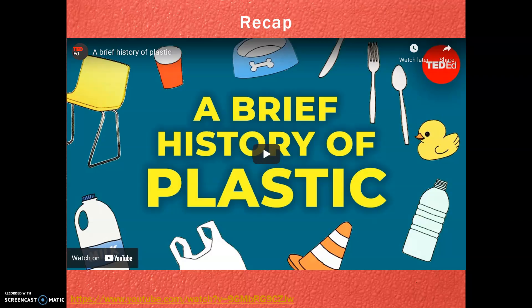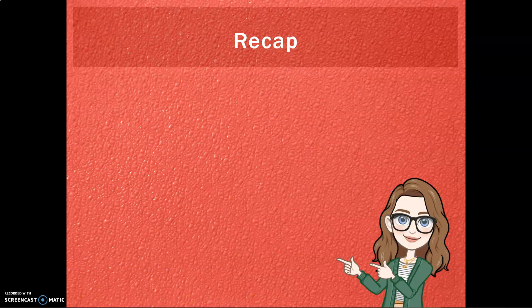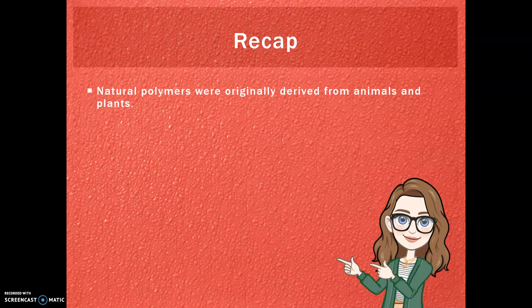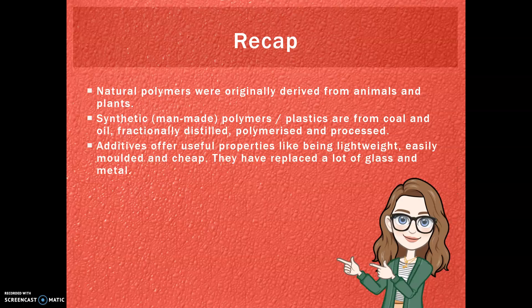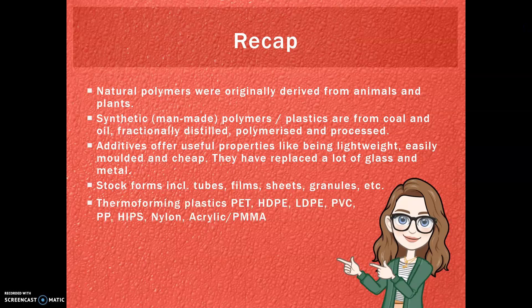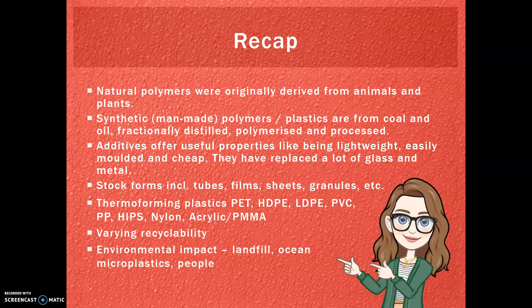If you'd like a really visual recap of everything we've covered today, I can highly recommend this video. In summary: natural polymers were originally derived from plants and animals, but nowadays synthetic polymers come from coal and oil by fractional distillation and polymerisation. Additives offer useful properties — they're lightweight, easily moulded, and cheap. Stock forms include tubes, films, sheets, and granules. We looked at common thermoplastics with varying recyclability, and the environmental impacts, thinking about the six Rs. Thanks, and catch you next time.